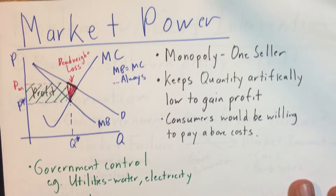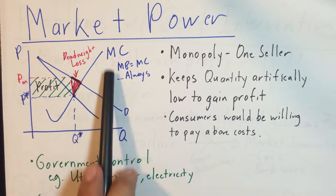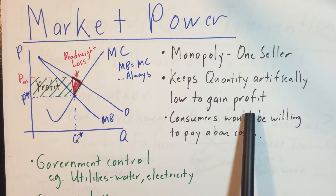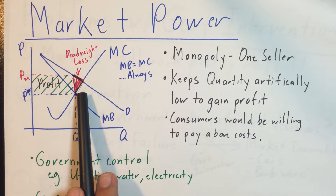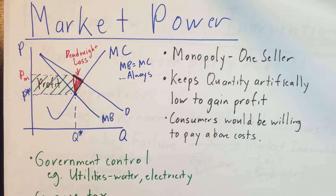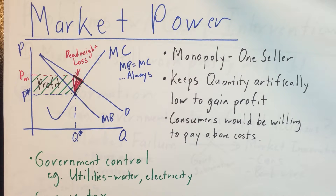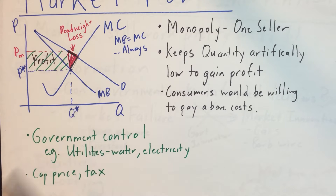The last case of market failure is market power. With a monopoly there is one seller, and the monopolist keeps quantity artificially low to gain profit — not producing where the demand curve equals the marginal cost curve — so some customers willing to pay for the good don't get it. This is inefficient. We typically see this in natural monopolies like utilities, water, and electricity, where the government solution is usually to take control of those industries and provide the good at Q*.